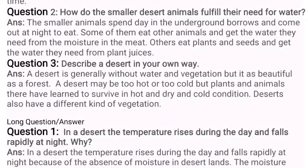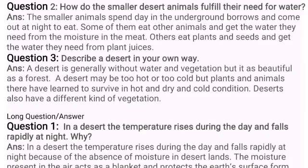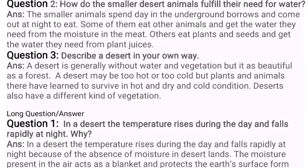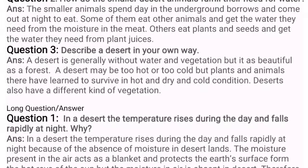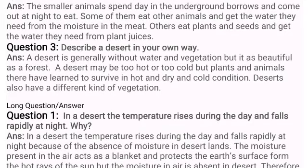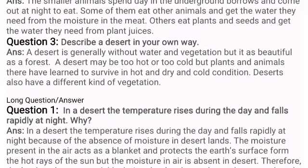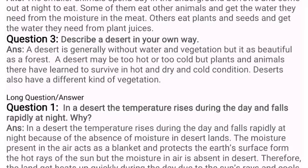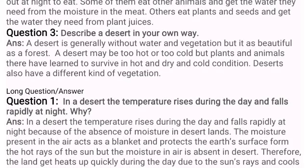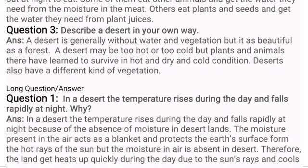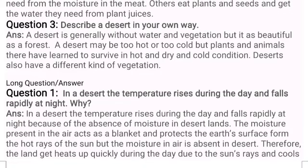Next is a long question: In a desert, the temperature rises during the day and falls rapidly at night — why? Answer: In a desert, temperature rises during the day and falls rapidly at night because of the absence of moisture in the desert land. The moisture present in the air acts as a blanket and protects the earth's surface from the hot rays of the sun.